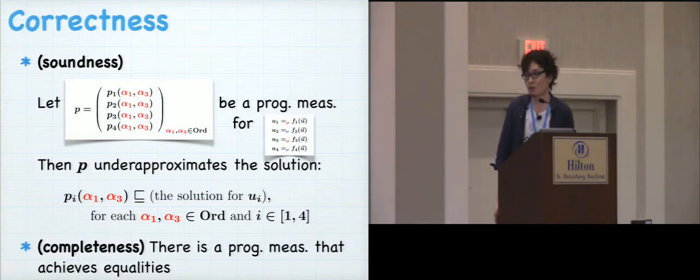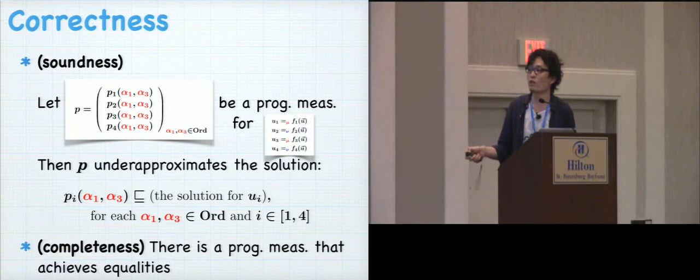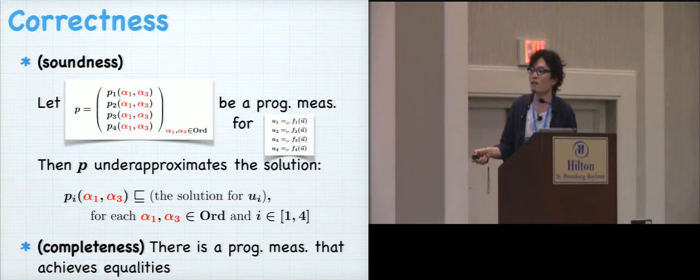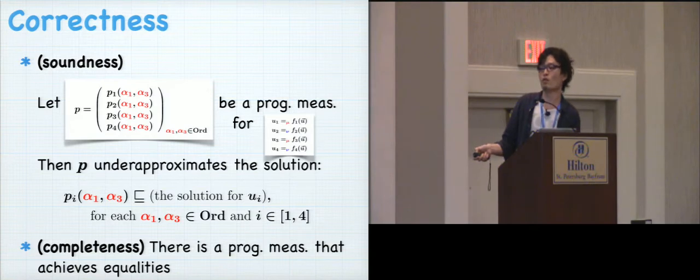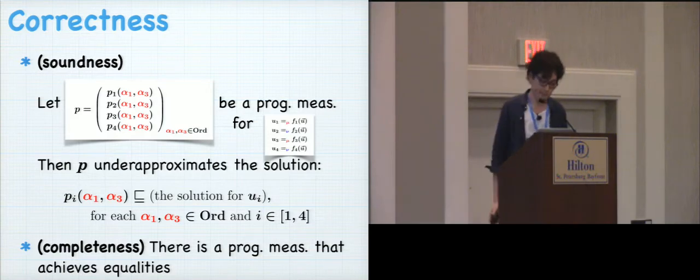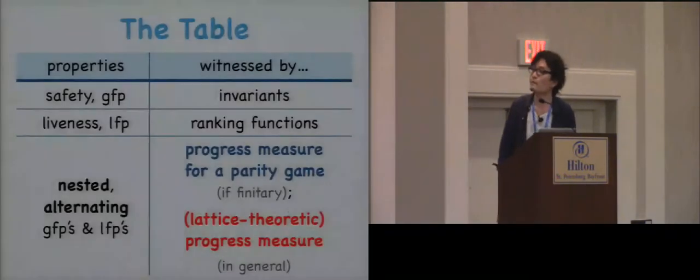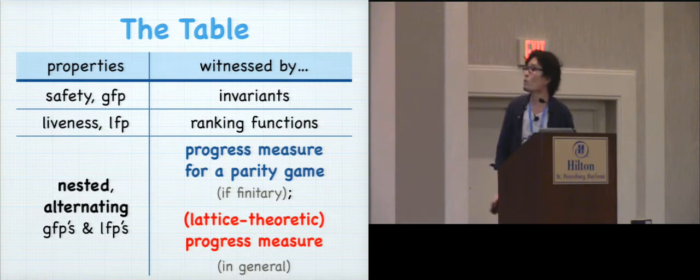Okay, so this has been the definition. Progress measure is such data subject to these conditions in which we saw these conditions derived from Cousot theorem and Knaster-Tarski theorem, and this truncated notion of lexicographic order plays an important role. And this is our correctness result. We have soundness. This progress measure witnesses or under-approximates the solution of such equational system. That means that each approximate is below the solution. And then there's also a completeness result that says that there's a progress measure that achieves equality here. And then we complete this table.